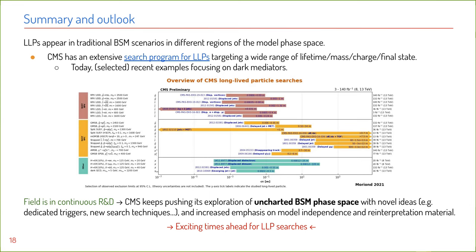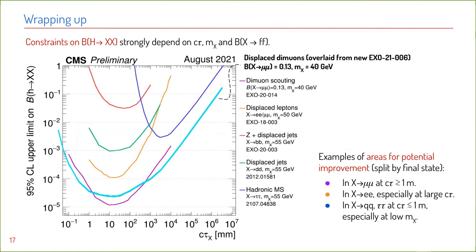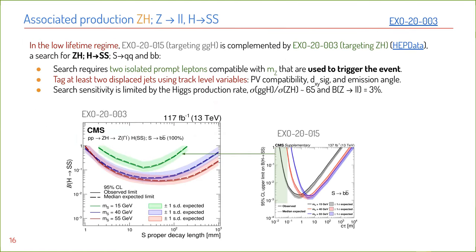Question on slide 16: you have this dilepton, dijet, di-B final state — do you know whether there are also searches for this final state without a finite lifetime requirement, i.e., going to the prompt limit?